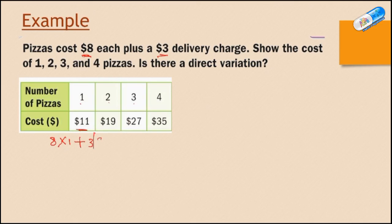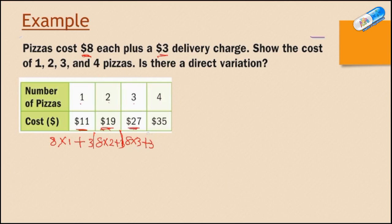For the second one, you're going to multiply 8 times 2 and add the 3 also. 8 times 2 is 16, plus 3 is $19. For the third one, it is 8 times 3 pizzas and add the 3, which is the delivery charge. 8 times 3 is 24, 24 plus 3 is 27. And for the last one here, this is 8 times 4 plus 3, and 8 times 4 is 32, plus 3 is 35.